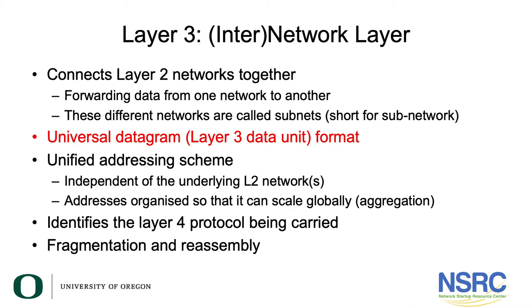To make that happen, layer 3 needs its own addressing scheme, because ethernet has one addressing scheme — 48-bit MAC addresses — PPP doesn't have any addresses, and other networks have other addressing schemes. So to make this work, the layer 3 datagram has its own unified addressing scheme which is independent of the underlying layer 2 networks. On top of that, this unified addressing scheme is organized so that it can scale globally.